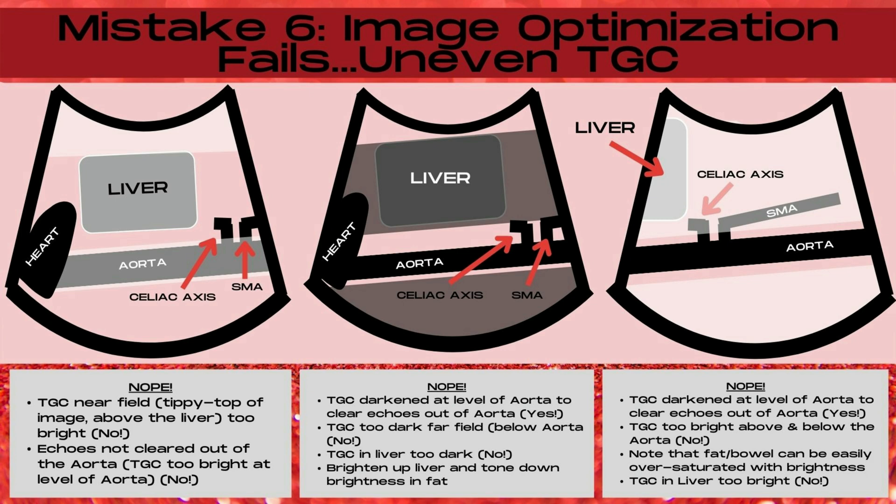Also in this image, the TGC at the level of the aorta is too bright and the echoes are not cleared out of the aorta. In the middle image, the TGC is darkened at the level of the aorta to clear the echoes out, and this is exactly what you should do.